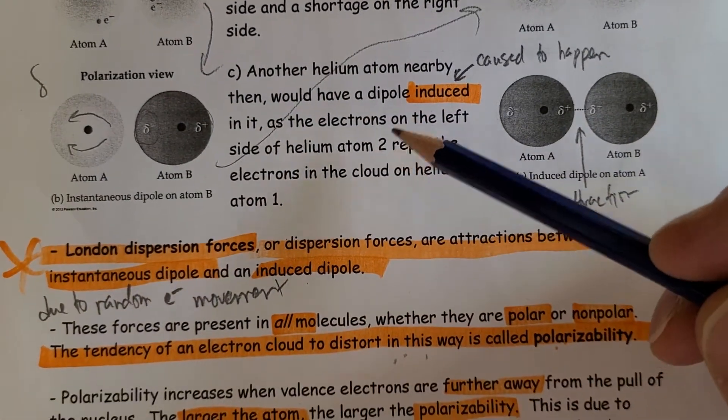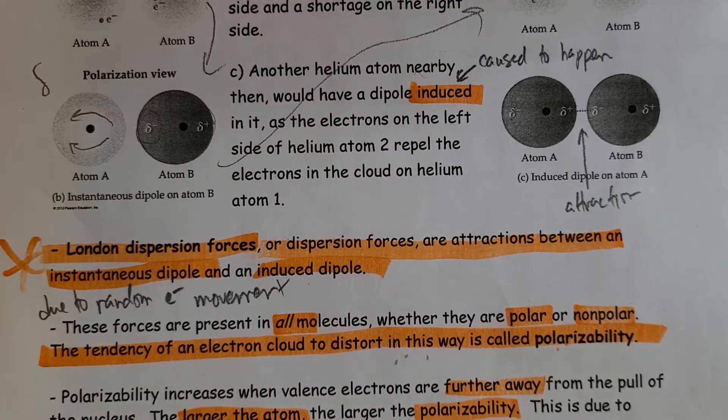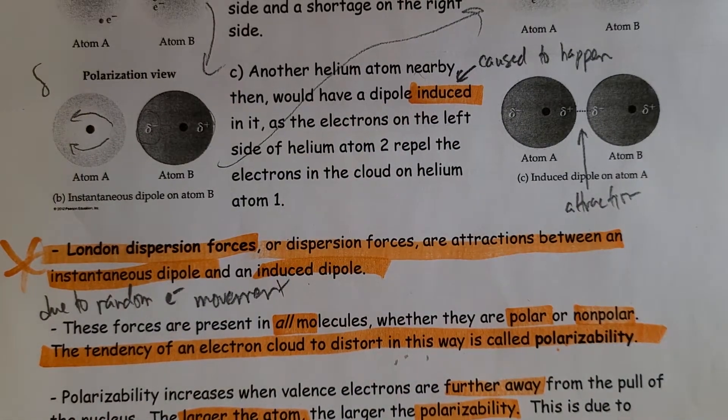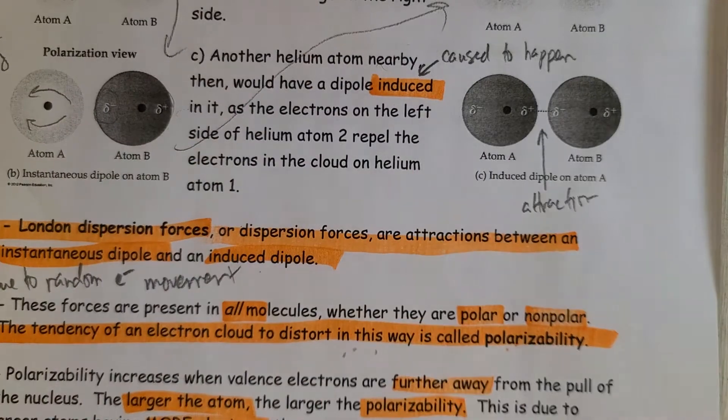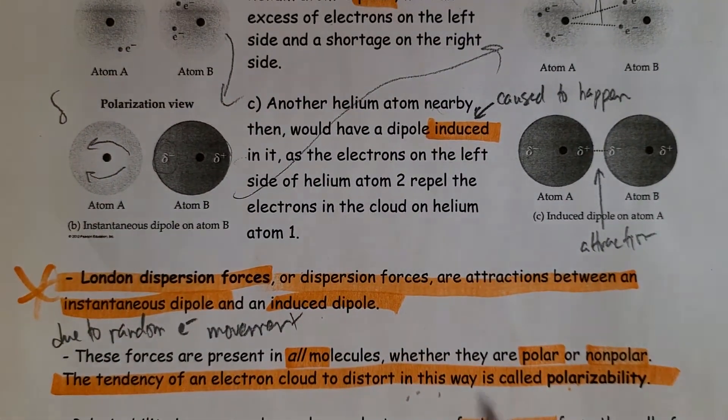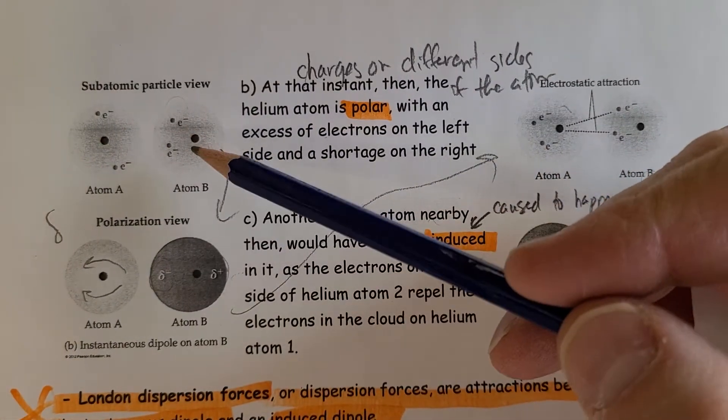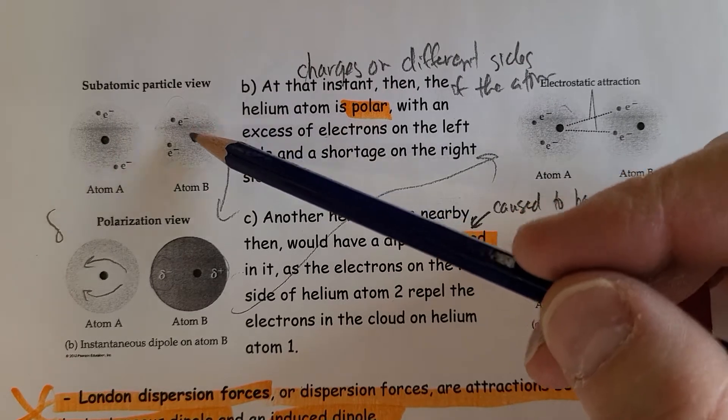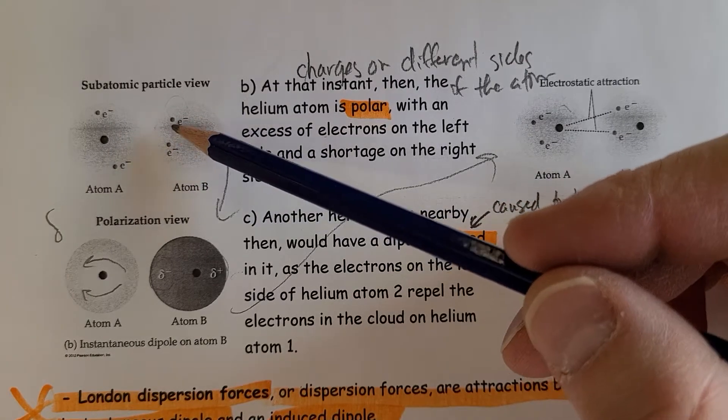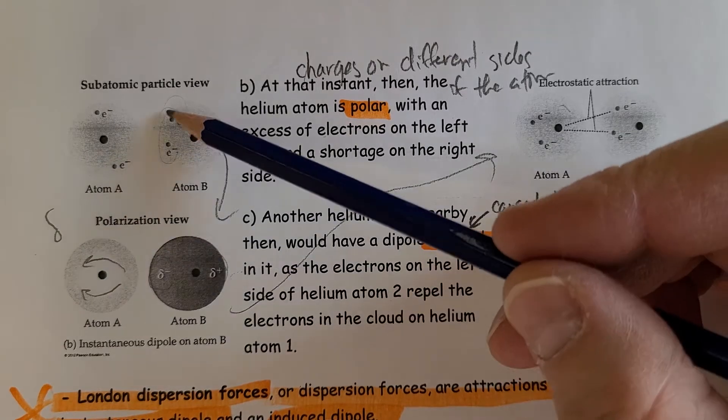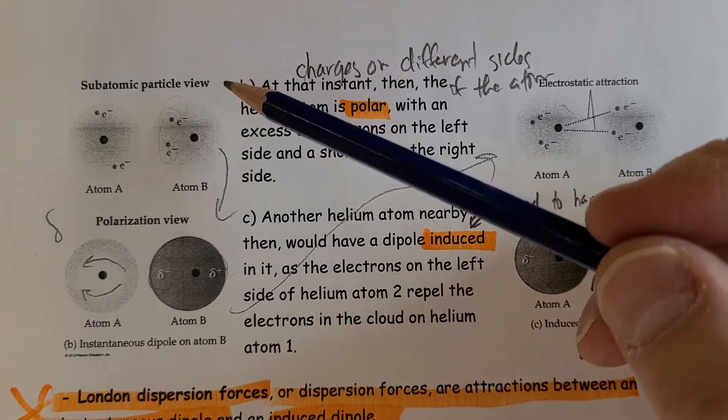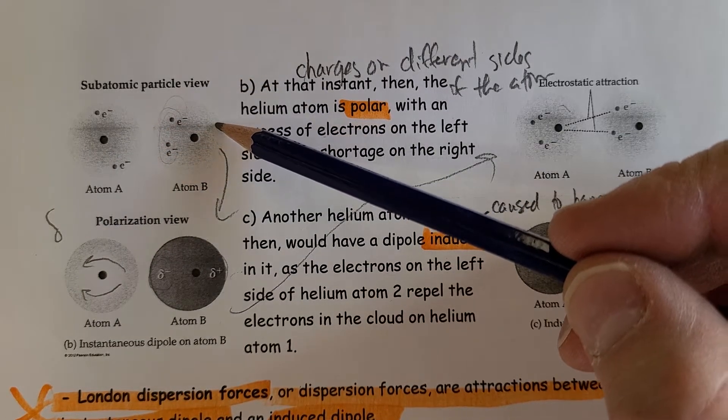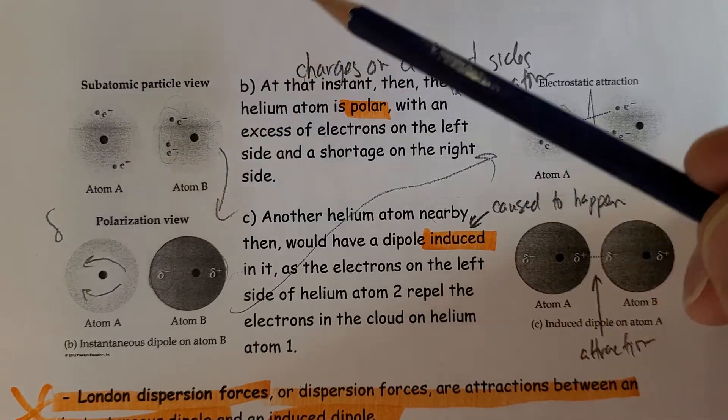We looked at dispersion forces, those forces that arise due to random electron movement. Remember, it may happen that all the, or mostly electrons in a particular atom meet on one side, and during that split moment in time, you would get a slightly negative area, which automatically means the opposite side is going to be positive.